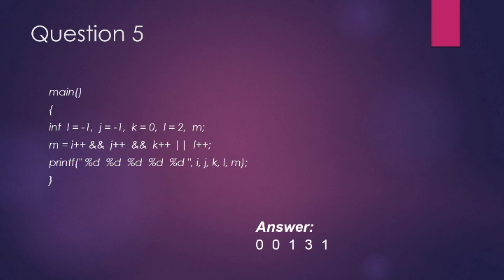So the value of m is 1 here at the end. The values of other variables are also incremented by one, so the final result will be 0, 0, 1, 3, and 1. Thank you guys, stay tuned for the next upcoming video.